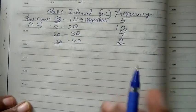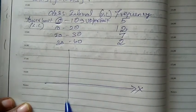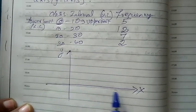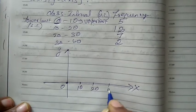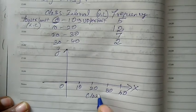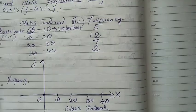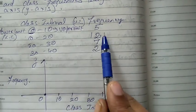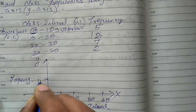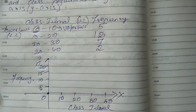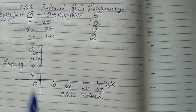First we do the rough diagram. In the graph, we draw the X-axis — horizontal line — then the vertical line. Class interval is placed on the X-axis: 0, 10, 20, 30, 40. And on the Y-axis we have frequency. The frequency numbers here are 5, 12, 7, 2 — so shall we take multiples of 5? 5, 10, 15, 20. By definition, X-axis is class interval and Y-axis is frequency.